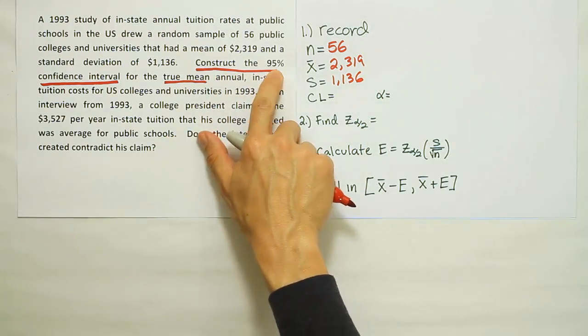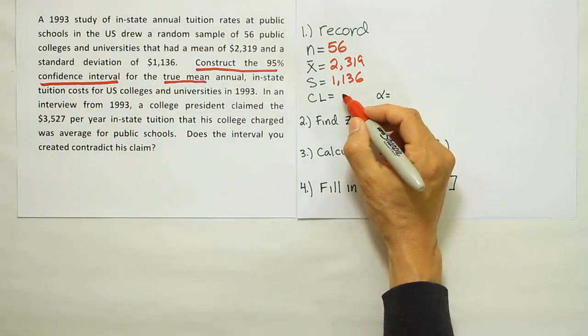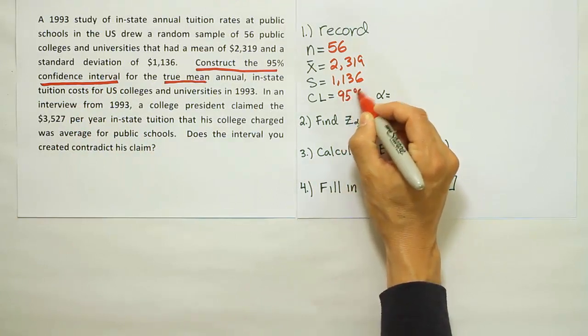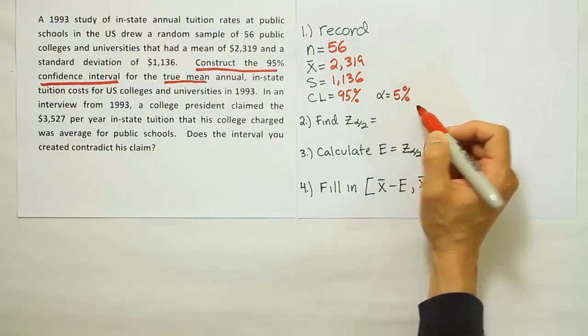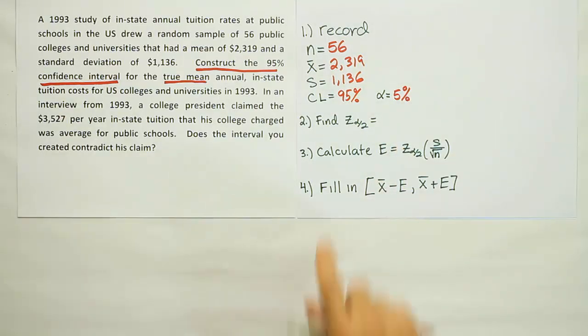The confidence level is expressed here, 95% confidence level. So we're going to use 95%. Alpha would, of course, be 5% in that case. 5%.